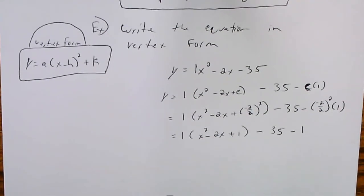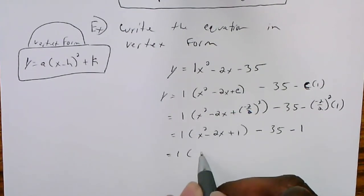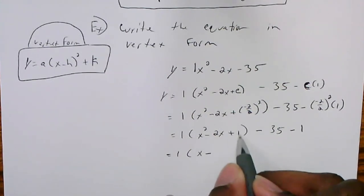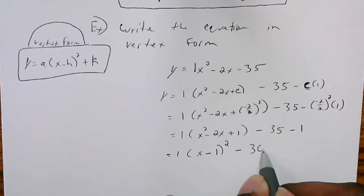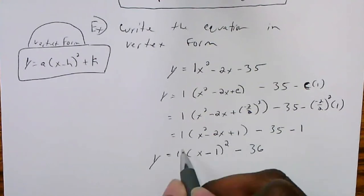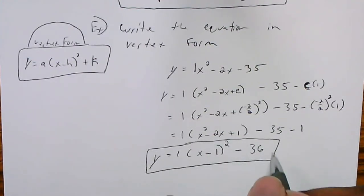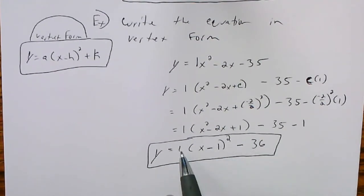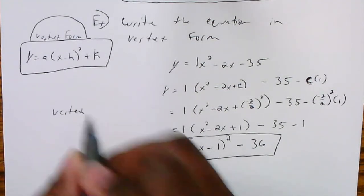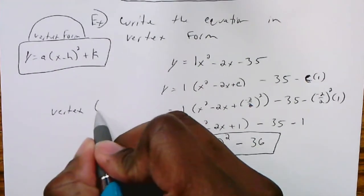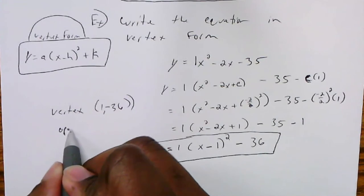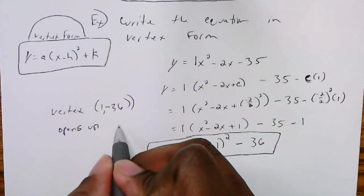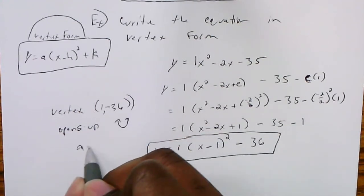Now I want to write that perfect trinomial as a binomial squared. Factoring x squared minus 2x plus 1, the square root of 1 is 1, so it factors as (x minus 1) squared. Then the constants combine: negative 35 minus 1 gives negative 36. So I have it in vertex form, and I can see h, k, and a. The vertex is (1, negative 36) and since a is positive 1 the parabola opens up.